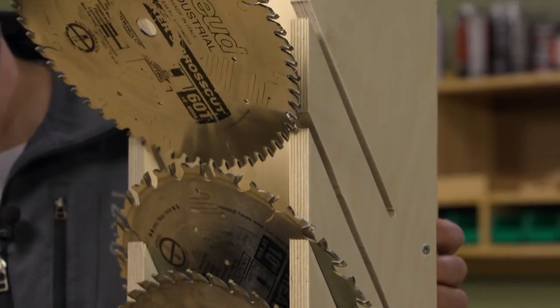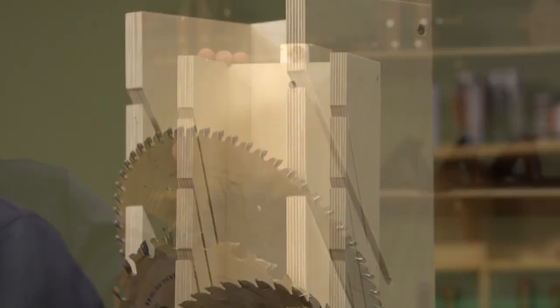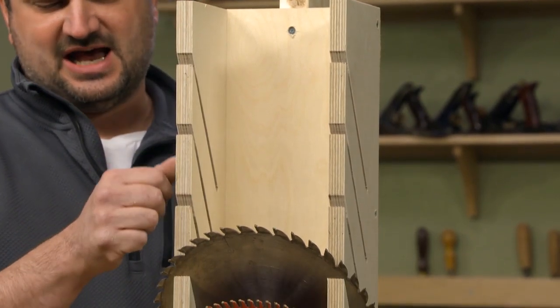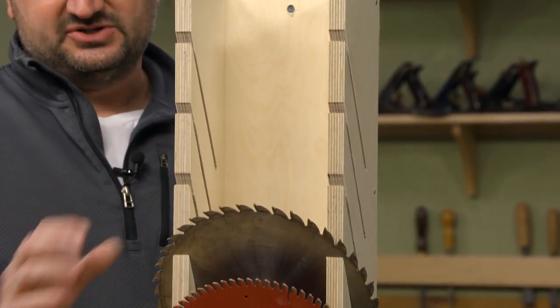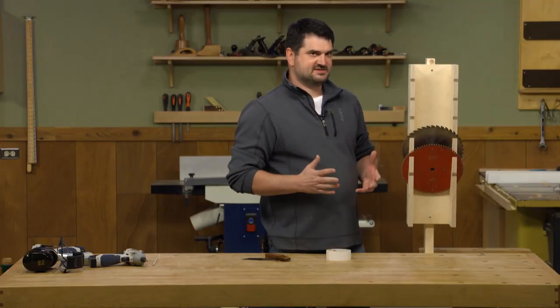It's pretty easy to make. It consists of just some pieces of three-quarter inch plywood. It starts out with the sides, and to make these slots in the sides, I first used double-sided tape to stick the two sides together so I could make them both at the same time.